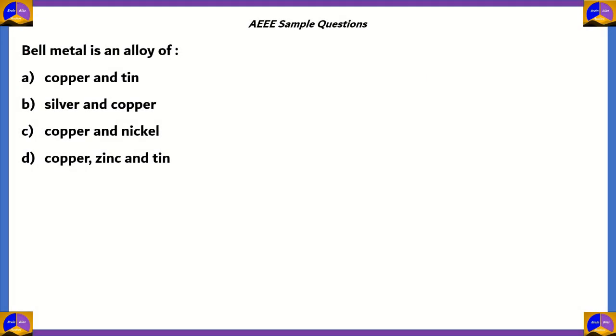Next question. Bell metal is an alloy of: copper and tin, silver and copper, copper and zinc, copper and nickel, or copper, zinc, and tin. Copper, zinc, and tin is option D,